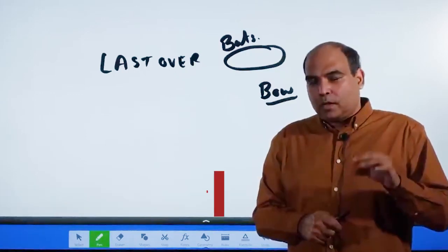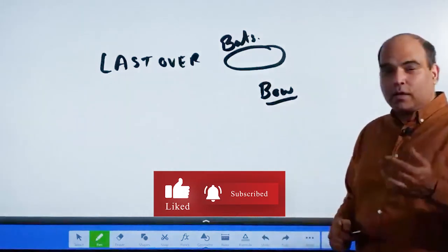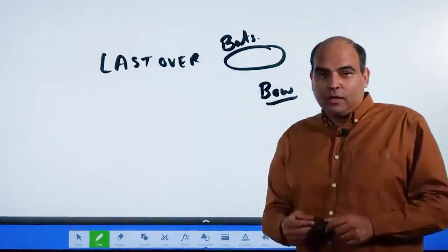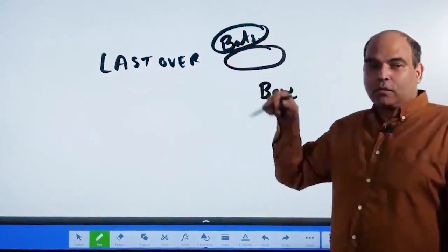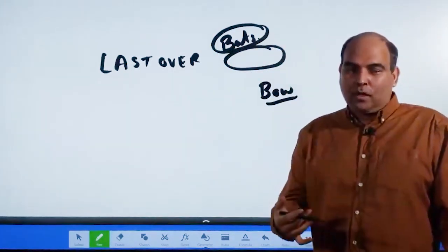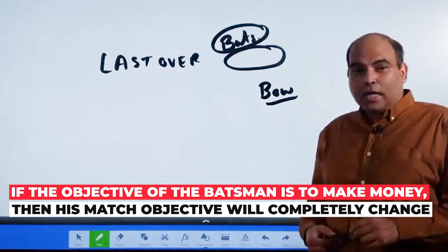For the same question the answer will change based on your objective. So in cricket match fixing, the batsman's objective is changed. A lot of his money, or somebody who is close to him, has money put into the match. Last over, maximum runs, right?